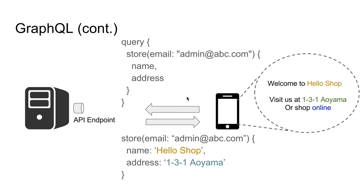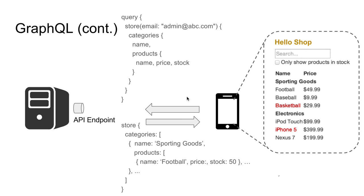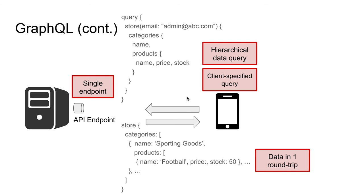Now if you click on 'shop online', the client will request for a different piece of data — in this case the categories and products of the store — to the same endpoint. And the same endpoint is capable of returning only the requested data, that is the categories and products. In summary: GraphQL consists of only a single API endpoint. GraphQL is hierarchical, because our React component is also structured hierarchically. The client has full control of the query, which results in no data being overfetched. And finally, all the data requested is returned in a single round trip.